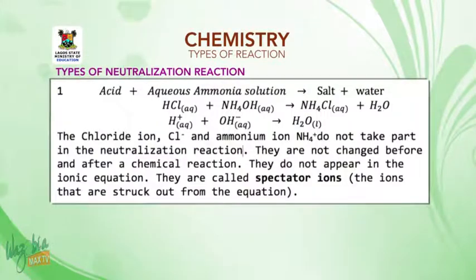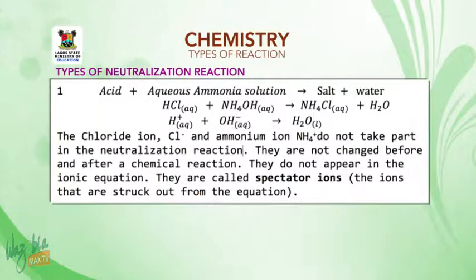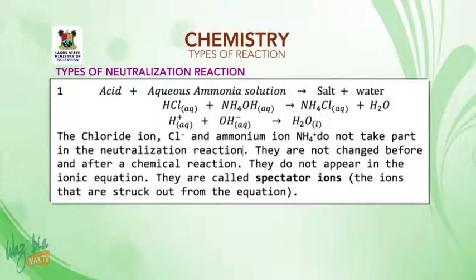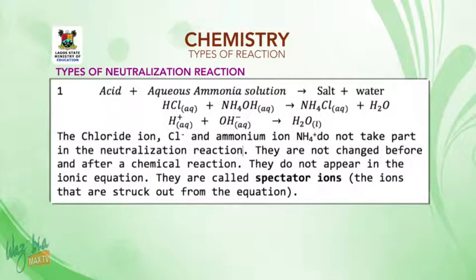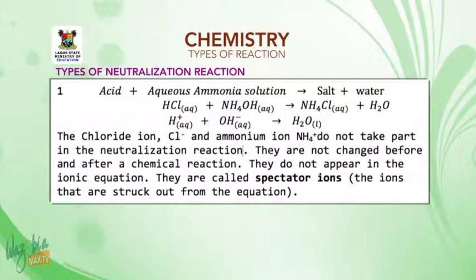Types of neutralization reaction. One: when acid reacts with alkali's ammonia solution, the products are salt and water. That is, HCl + ammonium hydroxide → ammonium chloride + water. The chloride ion and ammonium ion do not take part in the neutralization reaction — they are not changed before and after the reaction and do not appear in the ionic equation. They are called spectator ions: ions that are struck out from the equation.